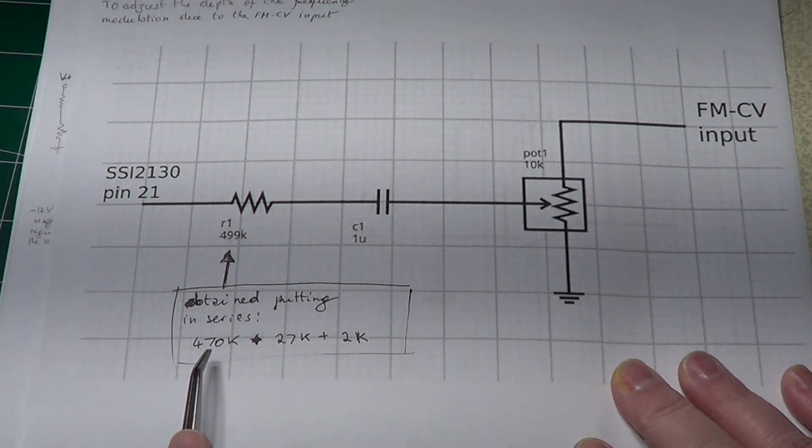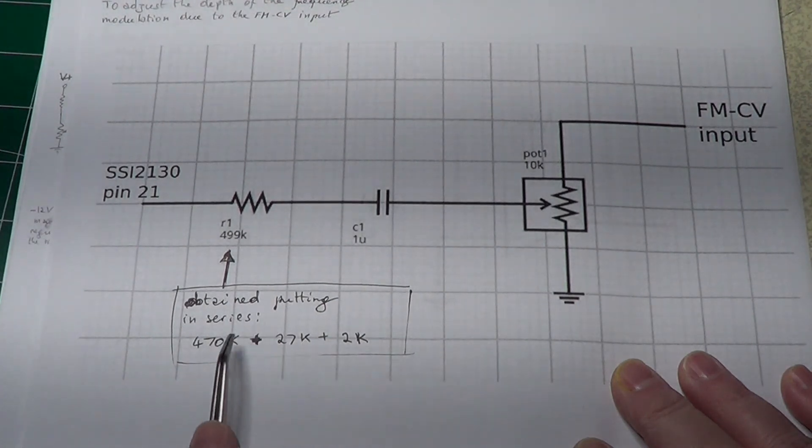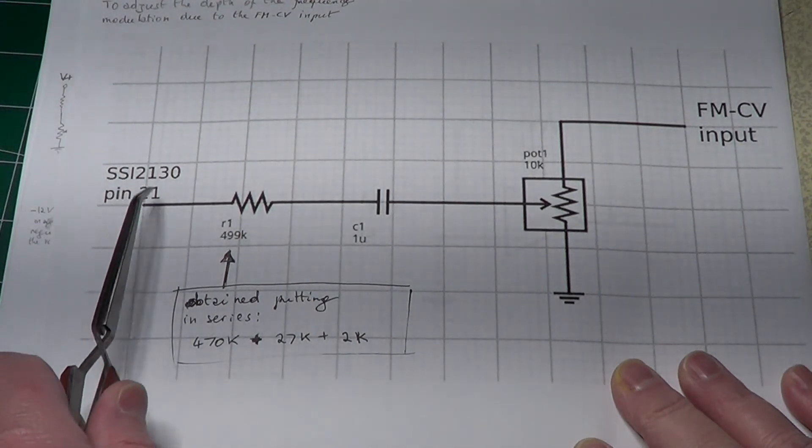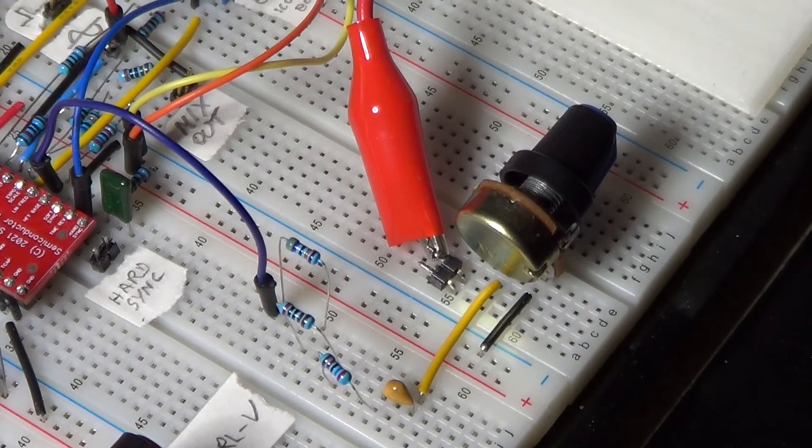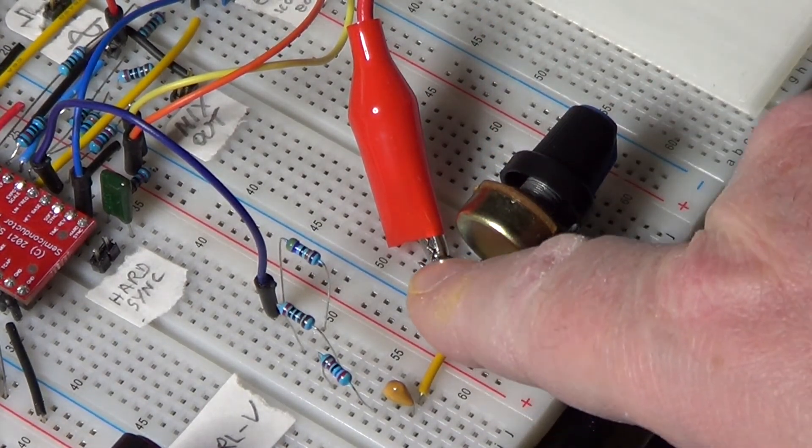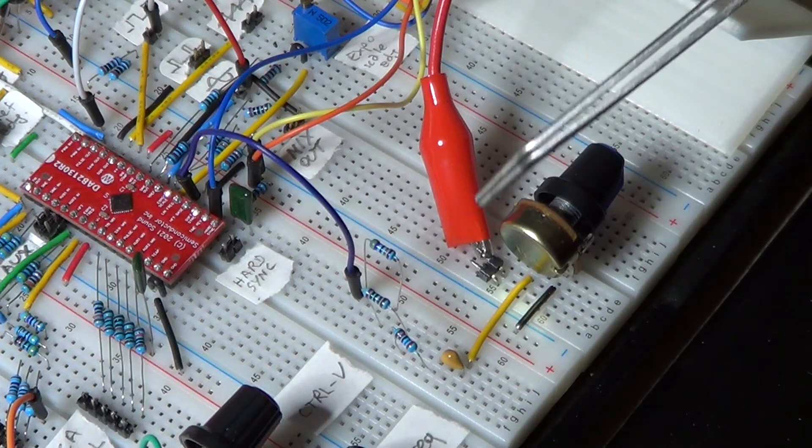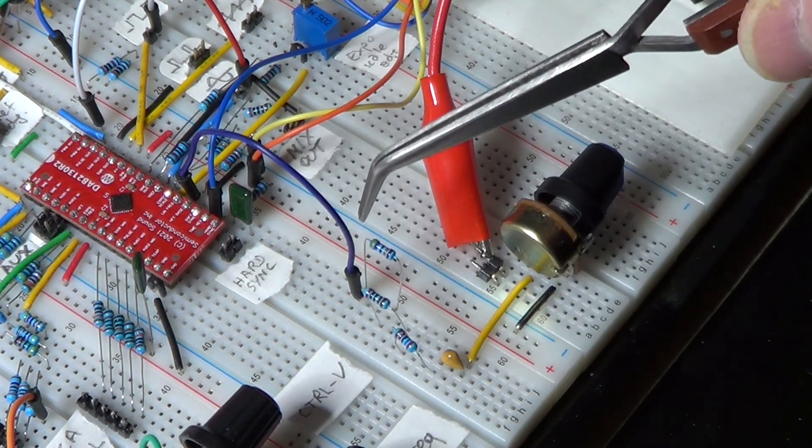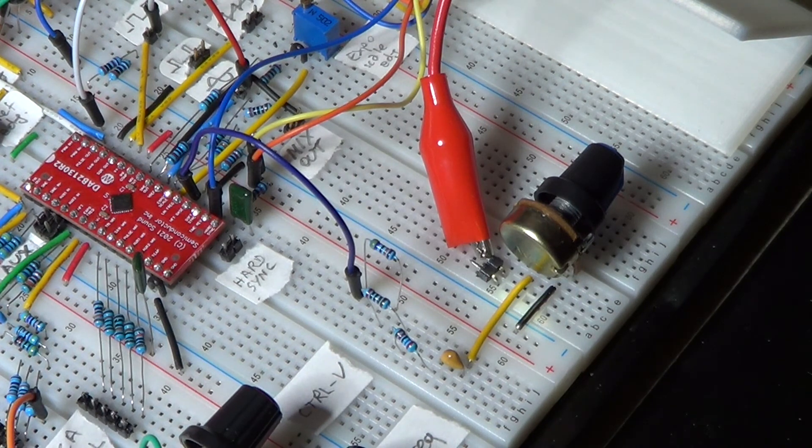The 499k resistor is not available commercially, and so I used a combination of three different resistors to make it. In this case, I put in series a resistor of 470k, another one of 27k, and a last one of 2k. And everything goes to pin 21, which is the linear control input of the VCO. Here is the circuit added to the breadboard, which is basically centered on this potentiometer that controls the depth of the modulation. This is the input, which I connected to my function generator, which right now is set to emit a sine wave of 5 volts amplitude and 0.7 Hz, so it is basically equivalent to what an LFO could generate. Here are the three resistors that make up the required 499k. And this finally is the blue wire that brings the signal into pin 21 of the SSI 2130.